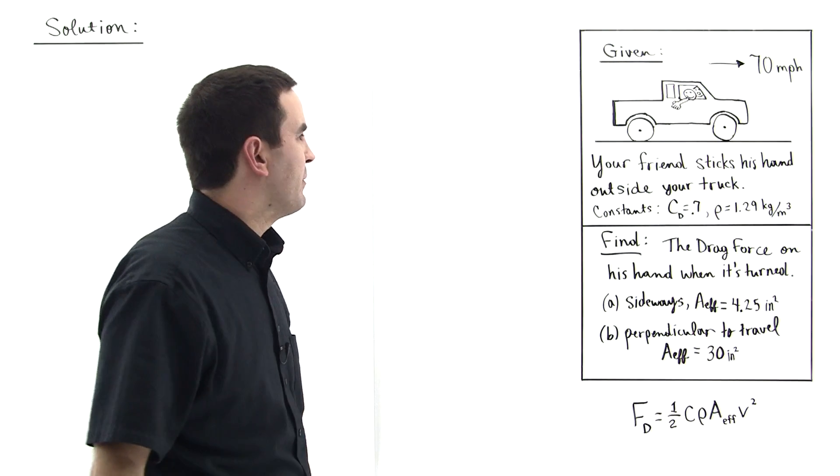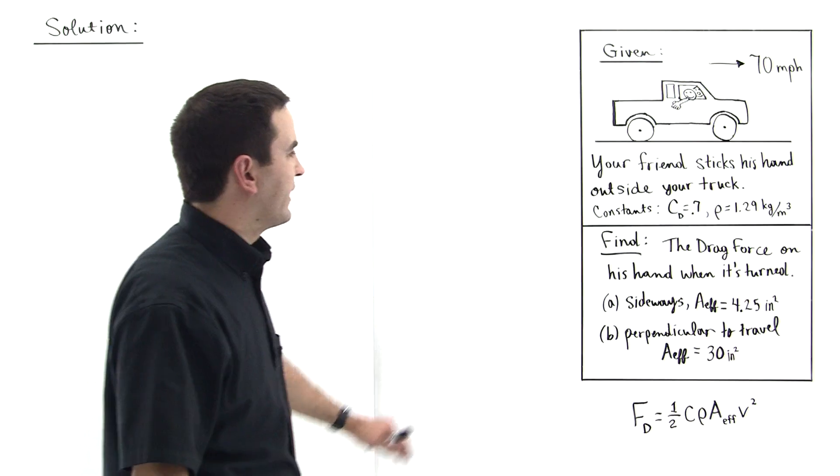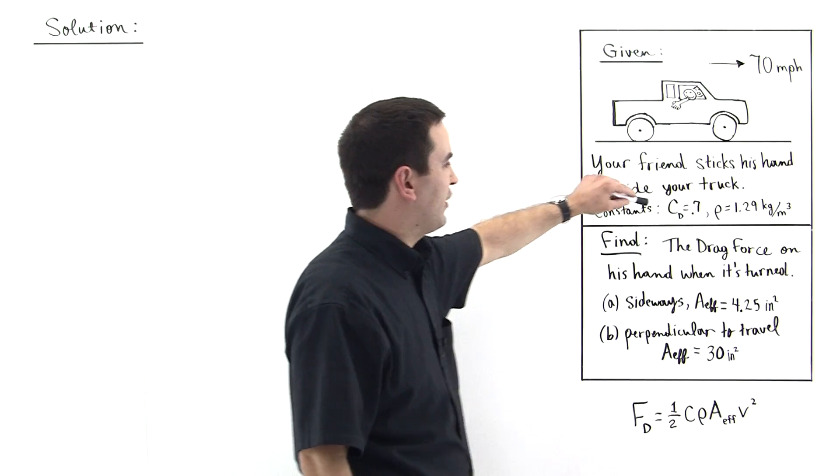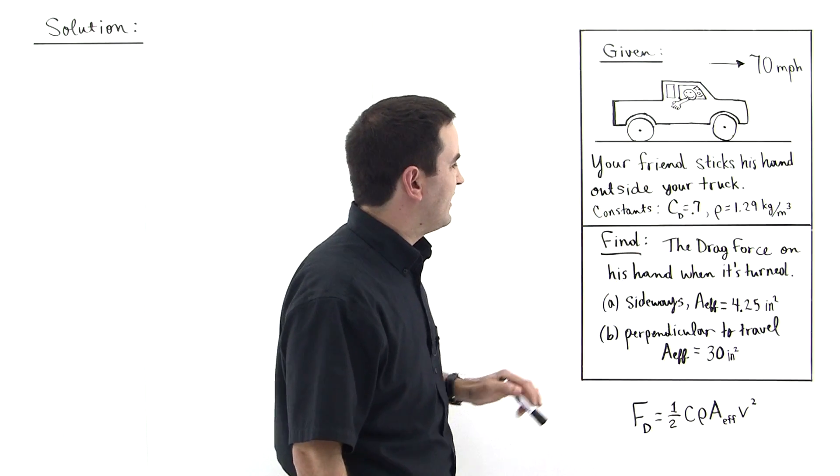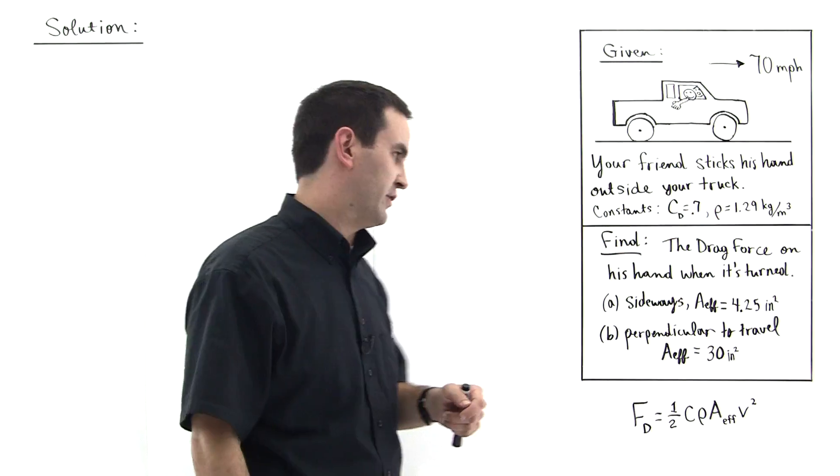You're driving along in your truck at 70 miles per hour when your friend sticks his hand outside your truck. We're given some constants here. This is a drag coefficient, 0.7, and this is the density of air, the density of the fluid that you're traveling through.